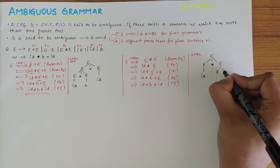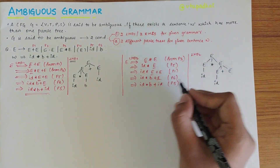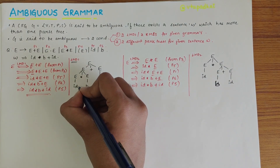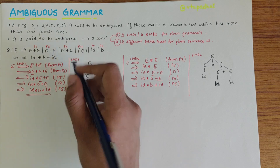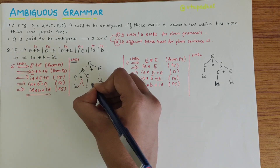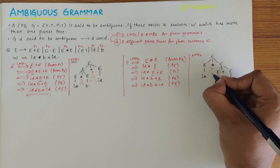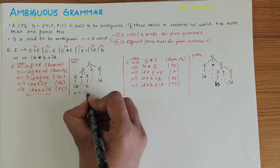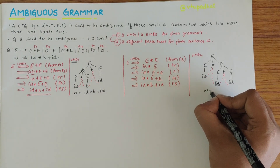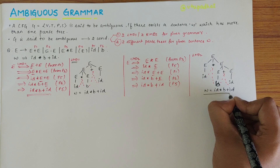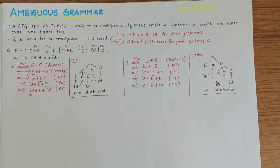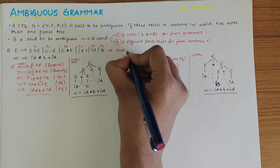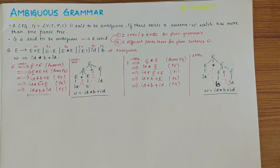For LMD2's parse tree, E goes to E*E; the left E changes to ID, and the right E changes to E+E, where that E changes to B and the other to ID. The yield of both trees, read left to right considering all terminals, is ID*B+ID. Since two different LMDs and two parse trees are obtained, this grammar is ambiguous.